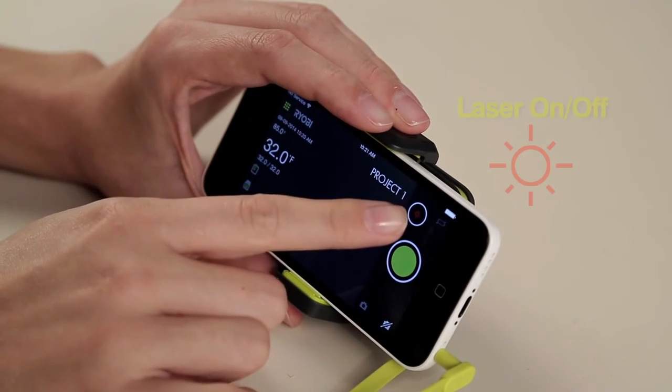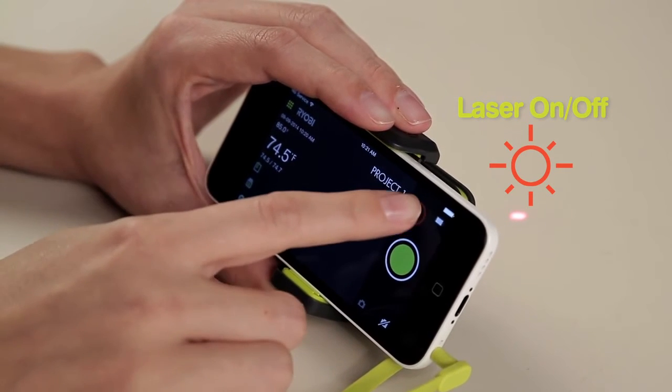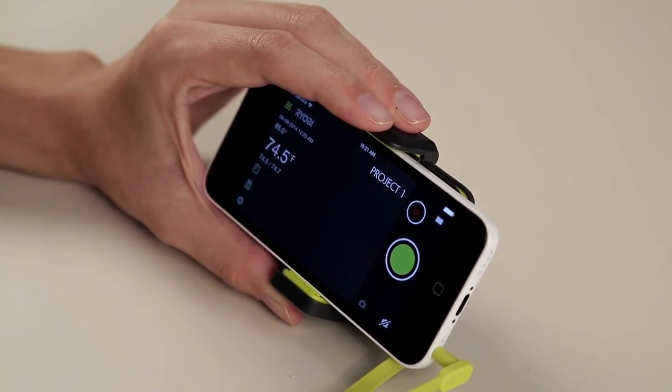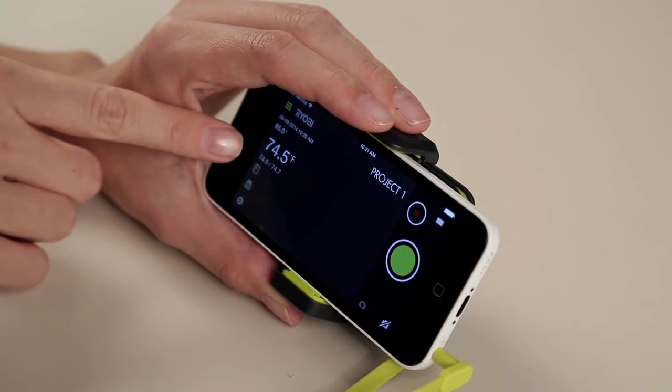When you are ready to use the infrared thermometer, touch the laser icon on the screen to turn it on. Touch again to turn it off. Never look into the laser beam or point the laser towards anyone. The range shown on the screen is the minimum and maximum temperature that has been read while the laser has been on.